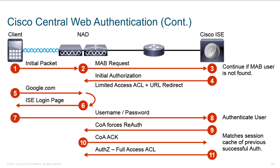Here's what the client flow looks like. The client attaches, sends an initial packet, and we identify it as a new user. We try a MAB request, which fails — because we couldn't find anything — but our policy says to continue if a MAB user is not found. So we fall back to giving a limited access control list and performing a URL redirect.